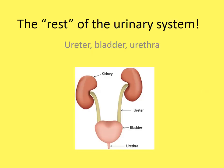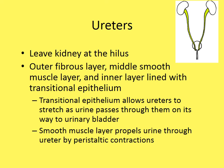Now for the remaining, simpler structures of the urinary system. The ureters leave the kidney at the hilus. They have an outer fibrous layer, a middle smooth muscle layer, and an inner layer lined with transitional epithelial cells, which allows them to stretch as urine passes through. The smooth muscle layer propels urine through the ureter by peristaltic contractions.